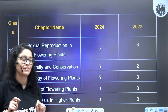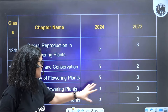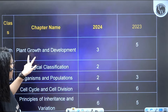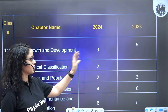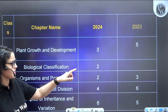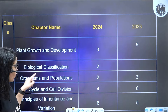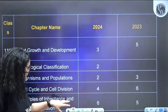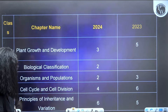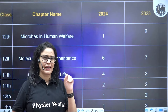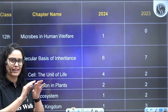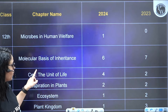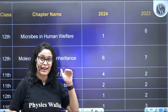Morphology in flowering plants — five questions; anatomy of flowering plants — three questions each year, equal weightage both years. Photosynthesis in higher plants — three questions each year. Plant growth and development — five questions past year, three this year. Biological classification — two questions, and last year they didn't ask any. Organism and population — two and three. Cell cycle and cell division — four questions this time, six past year. Microbes in human welfare — on average one to two questions, very small and simple.